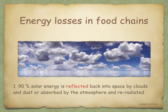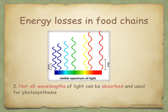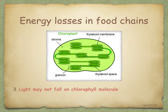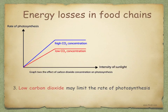Firstly, 90% of solar energy is reflected back into space by clouds and dust, or it's absorbed by the atmosphere and then re-radiated. Not all wavelengths of light can be absorbed and used for photosynthesis. Light may not fall on chlorophyll molecules — some sunlight may pass through the leaves without falling on chlorophyll, or the sunlight may be reflected off the leaves. Also, low carbon dioxide may limit the rate of photosynthesis.